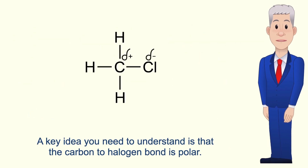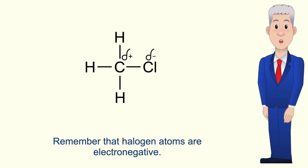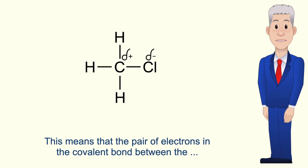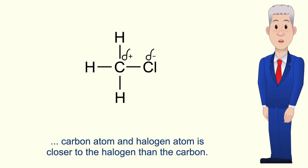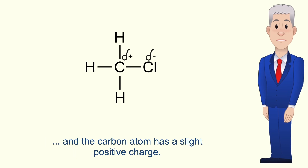A key idea you need to understand is that the carbon-to-halogen bond is polar, and this polarity affects both the physical properties and reactivity of haloalkanes. Halogen atoms are electronegative, meaning the pair of electrons in the covalent bond is closer to the halogen than the carbon. Because of this, the halogen atom has a slight negative charge and the carbon atom has a slight positive charge.